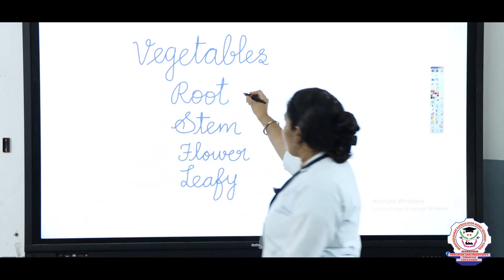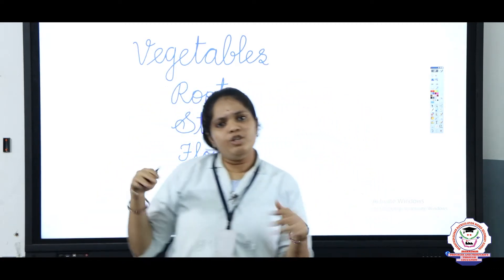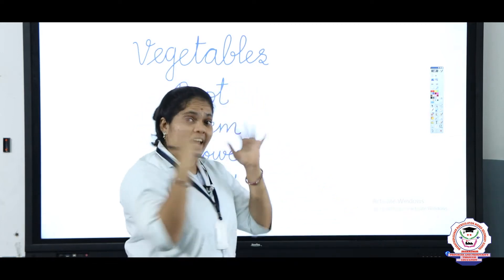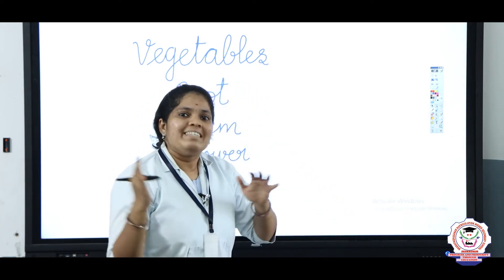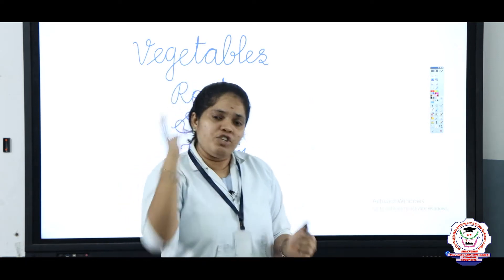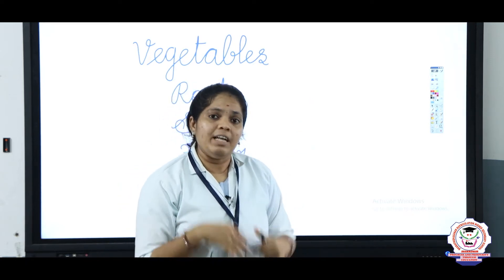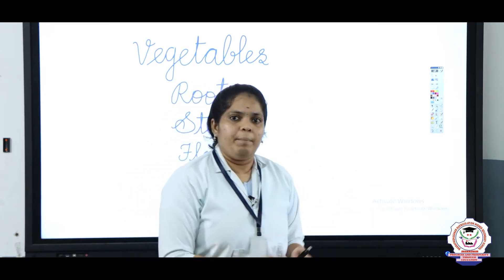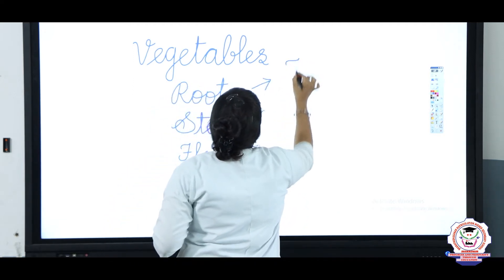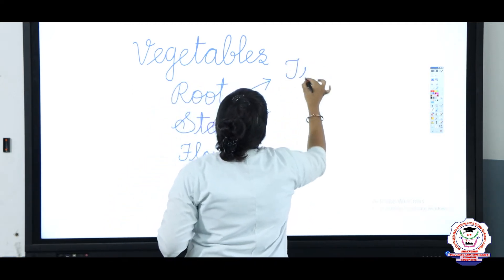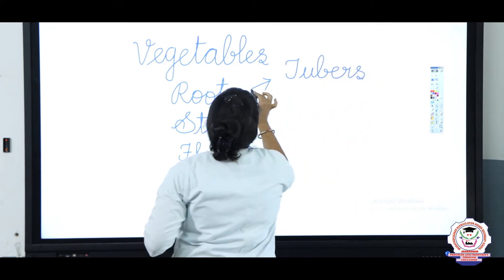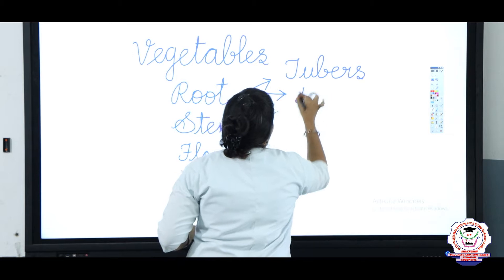Do you know that root vegetables can be classified into some more things? Yes, according to the shape of the root, we can segregate them. The first type is a tuber — T-U-B-E-R-S, tubers — and some may be a bulb — B-U-L-B, bulb.